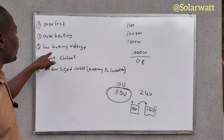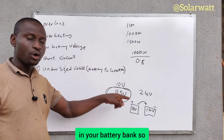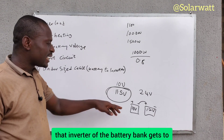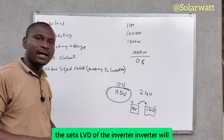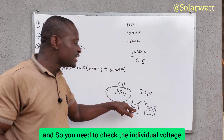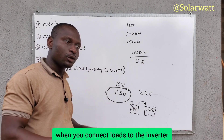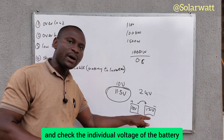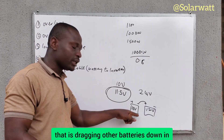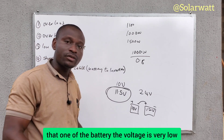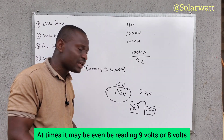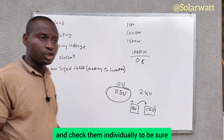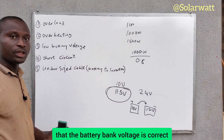The inverter will keep shutting down because it is detecting low battery voltage in the bank. When the battery bank voltage reaches the set LVD of the inverter, it will definitely shut down. Use your multimeter and check the individual voltage of each battery while the inverter is running with loads connected. This helps you identify the battery that is dragging the others down — it may be reading 9 or 8 volts while the others are still high. Check them individually to confirm that the battery bank voltage is correct.